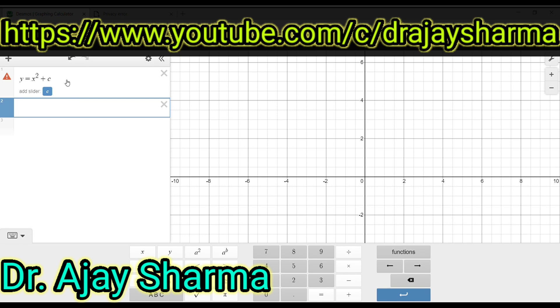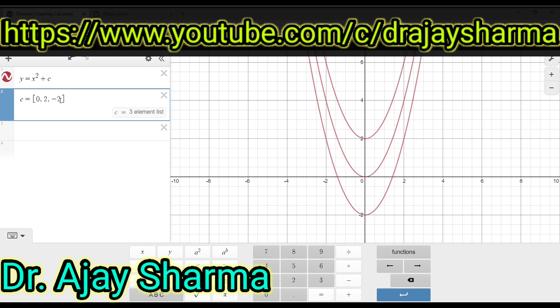Infinite values can be there. So when we take some of the values as 0, 2, and minus 2, these few values I have just taken to explain you, to make you clear.